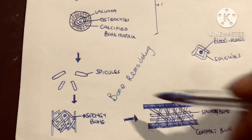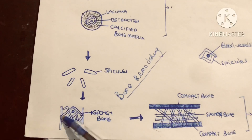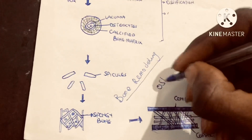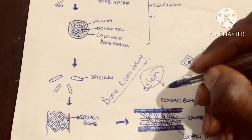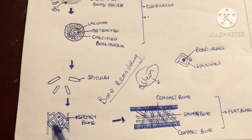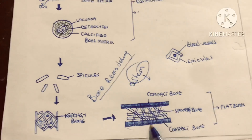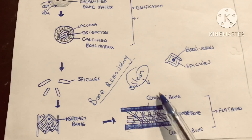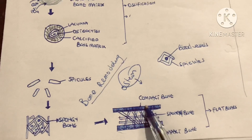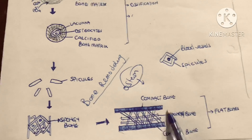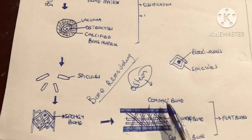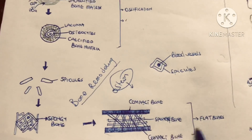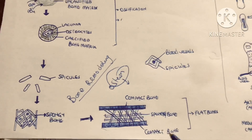During bone remodeling, the osteocytes at the edges of the spongy bone will rearrange themselves into a more tightly packed structure called the osteon. This leads to the formation of compact bone at the edges of the spongy bone. So there will be compact bone, spongy bone, and compact bone — this is the characteristic arrangement of a flat bone.